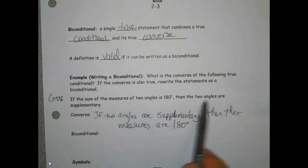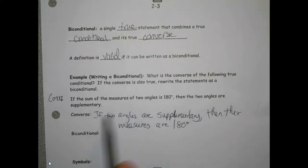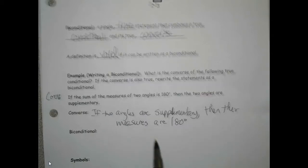Well, we know the first statement is true because if the sum of two angles is 180, then the two angles are supplementary. Then when I flipped it, that's also true. If the two angles are supplementary, then their measures are 180.